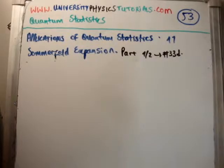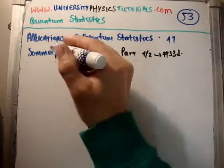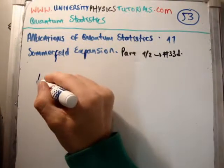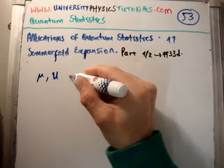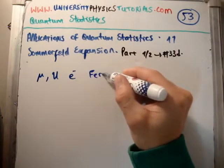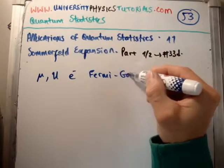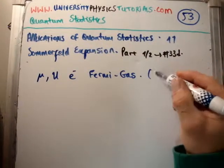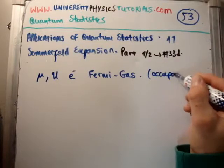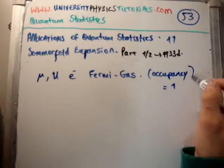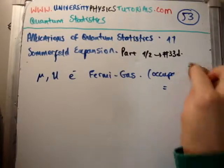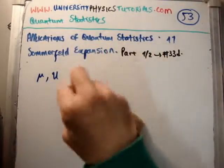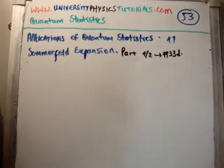So we need to ask ourselves: what is the Sommerfeld expansion all about? What we're trying to do is calculate the chemical potential mu and the total energy U due to the electrons in a Fermi gas — a degenerate Fermi gas. Degenerate means that the occupancy is equal to 1; we're at temperature T equal to 0, so the occupancy is equal to 1 up to the Fermi level.